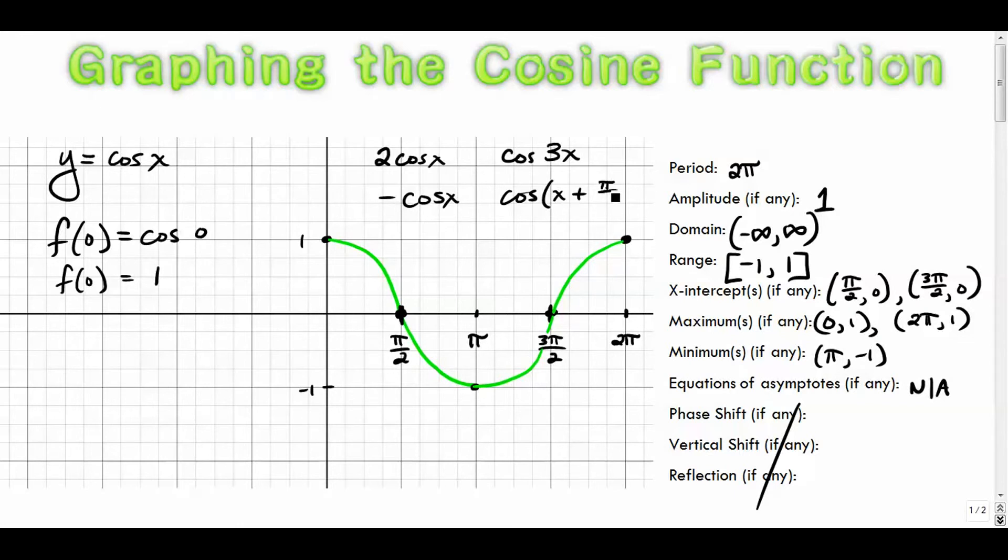Sometimes we'll even change what we call the c value, which changes the phase shift. So it'll just start in a different place. And finally, sometimes we'll kind of change where the graph vertically translates to. These are all of our transformations, which we'll get to later. But this is the basic cosine function.